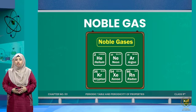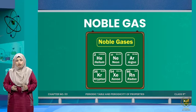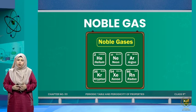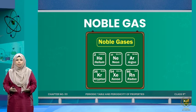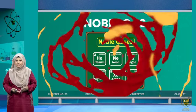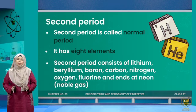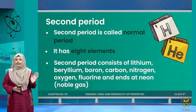There is an important pattern: the first period ends on a noble gas — helium is a noble gas. Noble gas means its outermost shell is completely filled. The first shell has a maximum capacity of two electrons, and helium has exactly two electrons in its outermost shell. So helium will not react with any other element to form a compound. Moving to the second period, it is called a normal period because it has eight elements.